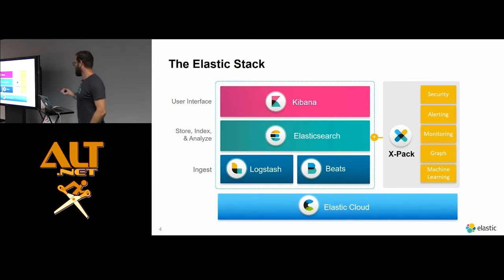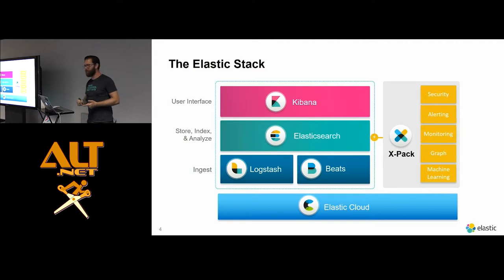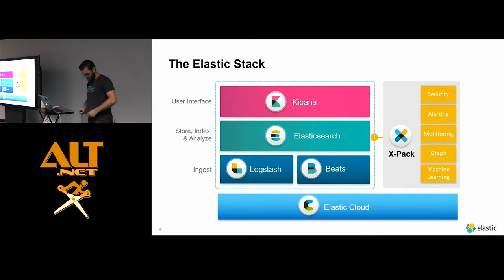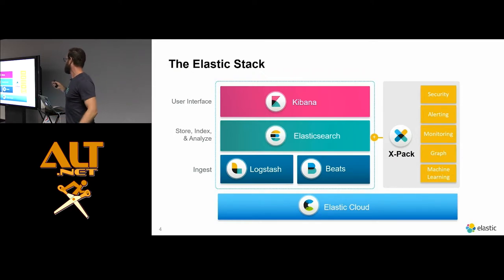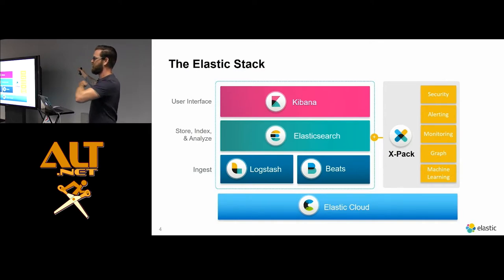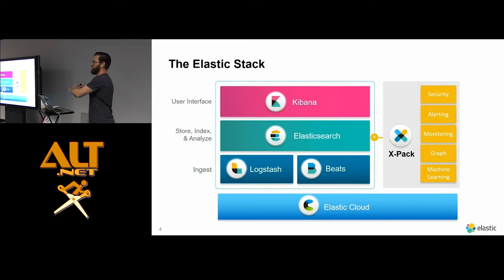Down at the bottom we have Elastic Cloud, which is basically Kibana and Elasticsearch as a service hosted in the cloud - currently on AWS and on GCP, Google Cloud Platform. We'll be coming to Azure at some point in the future. There's also an additional commercial product called Elastic Cloud Enterprise, or ECE. It's essentially the infrastructure we use to run Elastic Cloud ourselves. If you're an enterprise customer, you can use ECE to spin up clusters ad hoc for various departments in your organization.